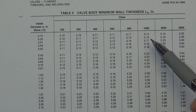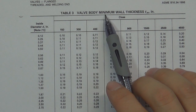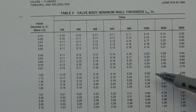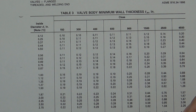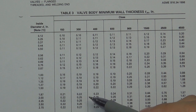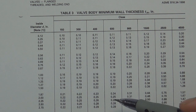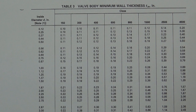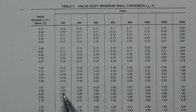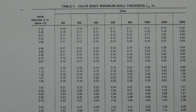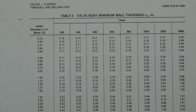This is the table from ASME B16.34, called the valve body minimum wall thickness table. In this table, you will find the minimum wall thickness for valves of different pressure classes and sizes. For example, if you are a valve design engineer and you want to design a 2-inch, class 150 valve, the wall thickness needs to be at least 0.22 inch thick. This is the minimum wall thickness for your valve, and from this table we can find all the thickness values needed to design a valve.